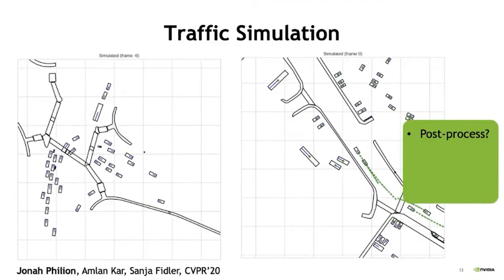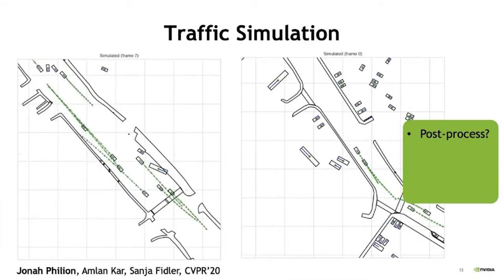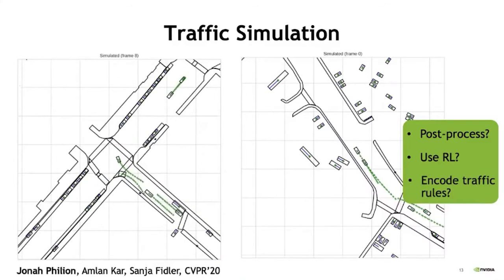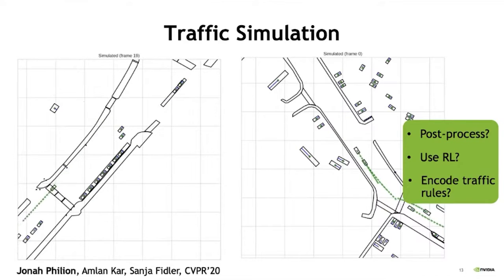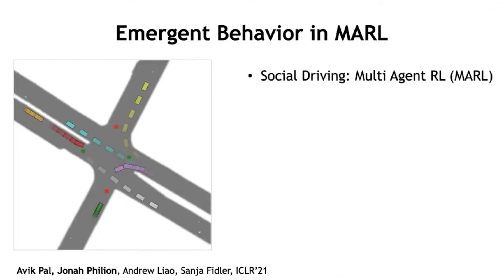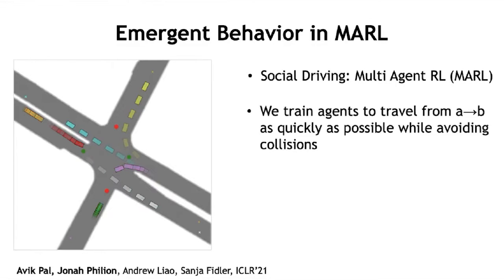One question is: what do I do? I can post-process, maybe avoid collisions, or combine imitation learning with RL. But then how do I encode reward functions and all the traffic rules? There are just so many of them. In this project, we take a different perspective and investigate social driving. We formulate driving as an optimization problem in a multi-agent RL framework, and we try to design the most simple reward functions possible. In particular, we train agents to travel from A to B as quickly as possible without colliding.